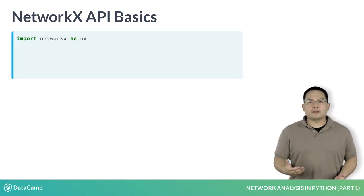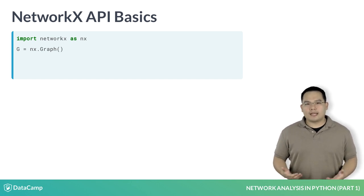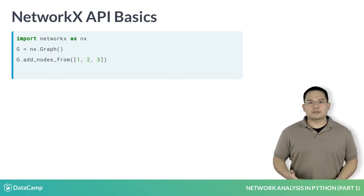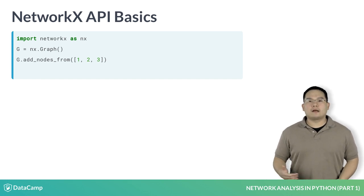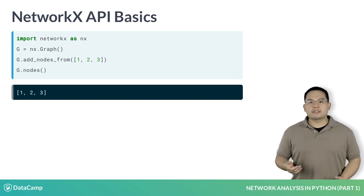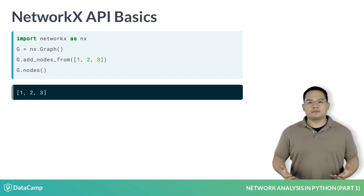NetworkX is typically imported as nx. Using nx.graph, we can initialize an empty graph to which we can add nodes and edges. I can add, for example, the integers 1, 2, and 3 as nodes, using the addNodesFrom method, passing in the list 1, 2, 3, as an argument. The graph object G has a .nodes method that allows us to see what nodes are present in the graph and returns a list of nodes.